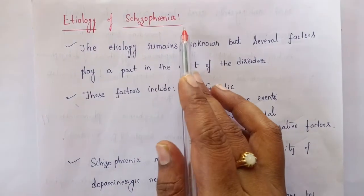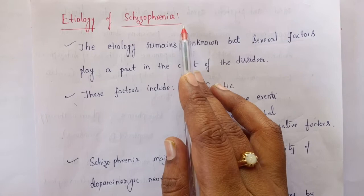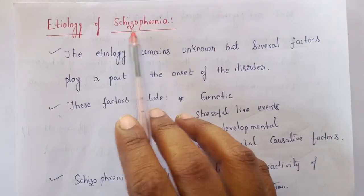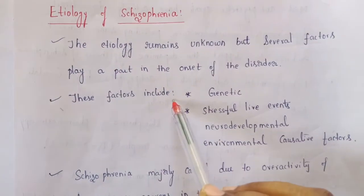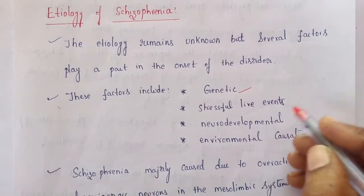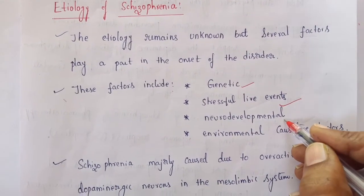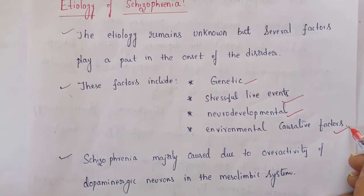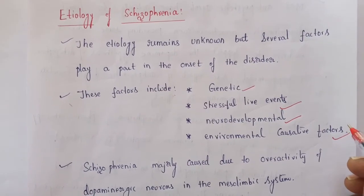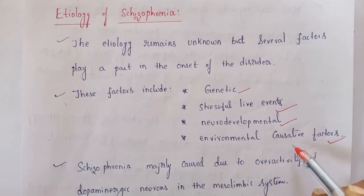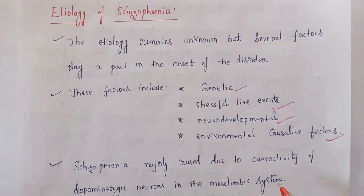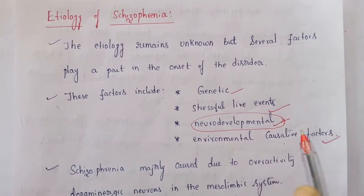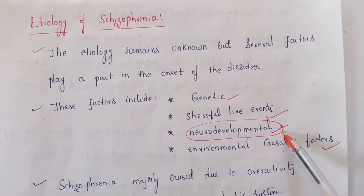Coming to the etiology of schizophrenia, the major cause is not clearly known, but several factors play an important role in its onset. These include genetic variations, stressful life events, neurodevelopmental or neurological factors, and environmental causative factors. We focus especially on neurological and neurodevelopmental factors because they are the target for antipsychotic drugs.